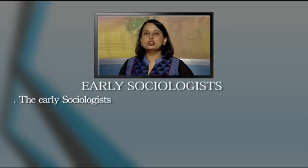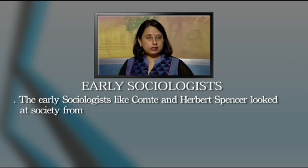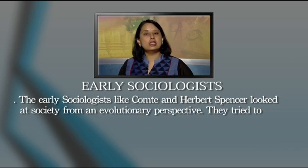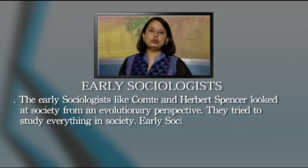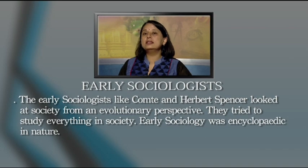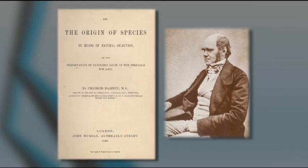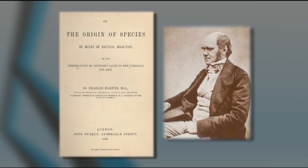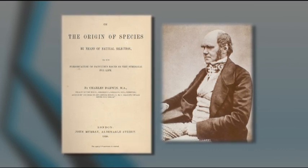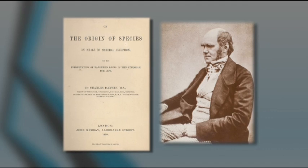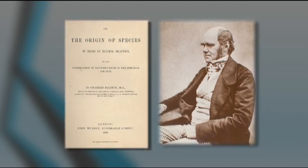The early sociologists looked at society from an evolutionary perspective — they tried to study everything in society. This was also the time of Charles Darwin, the famous scientist who wrote 'The Origin of Species,' looking at how different biological species on earth evolved. That had an impact on sociology as well, which is why early sociologists were evolutionary in nature and also encyclopedic.